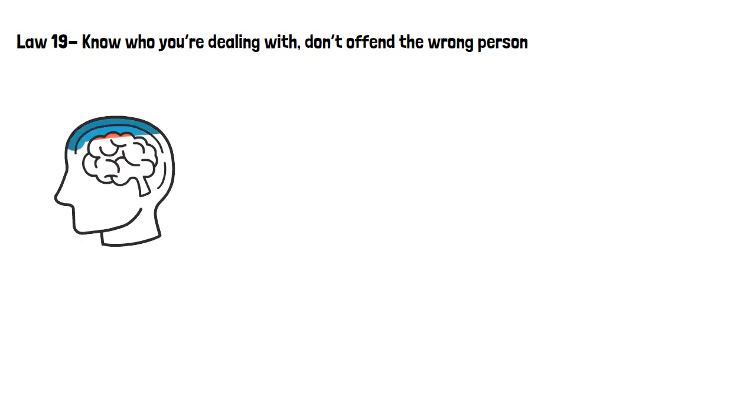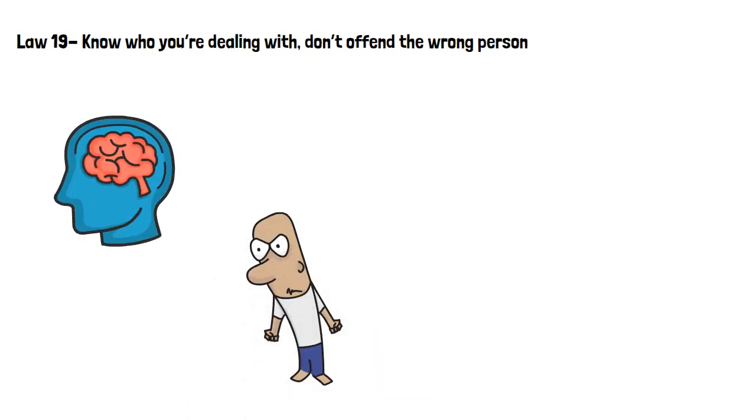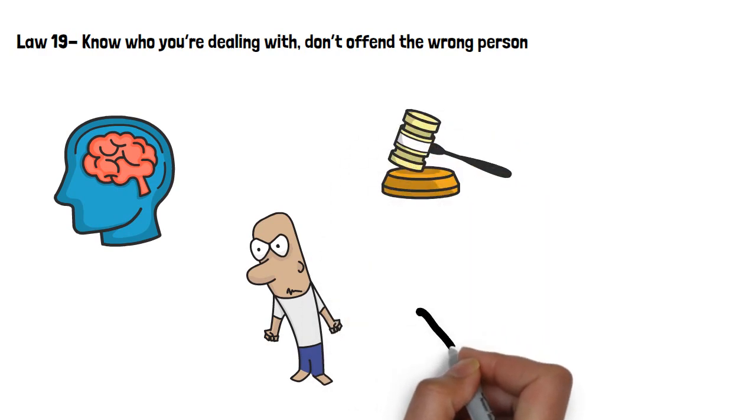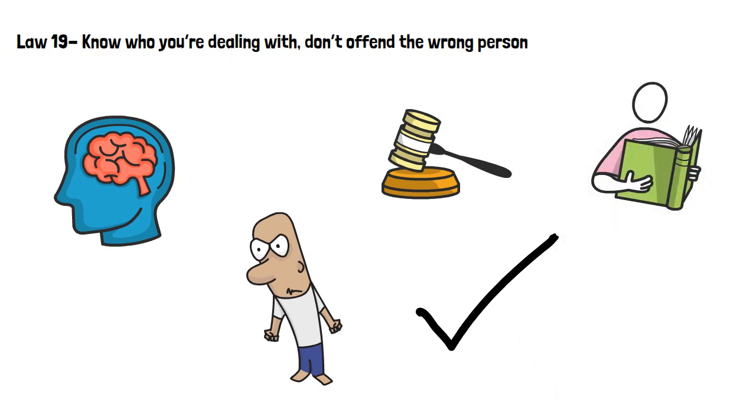Law 19, know who you're dealing with. Don't offend the wrong person. Choose your enemies wisely. Some people, once defeated, will spend the rest of their lives seeking revenge. Therefore, it is sensible not to offend the wrong person. The skill of correctly measuring people is the most important with regards to getting and maintaining power. Before you work with people, be sure to have studied them over a long period of time to know their true nature.